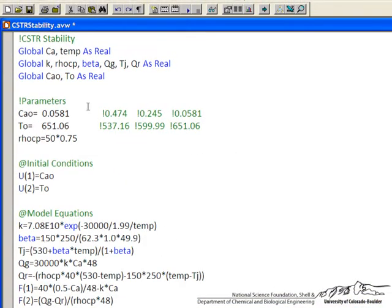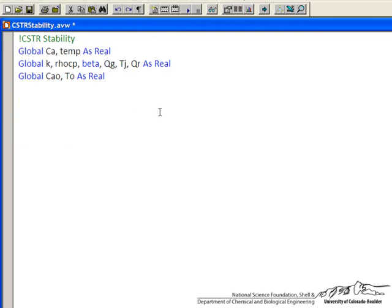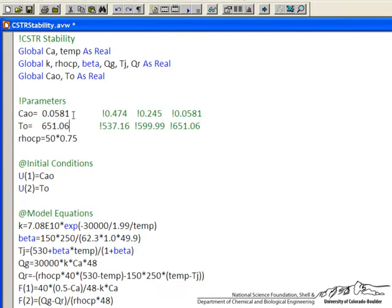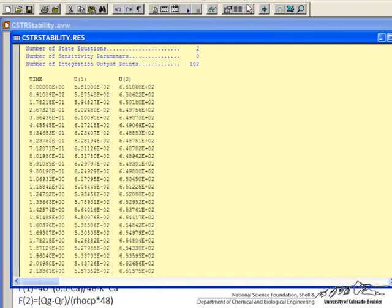Okay, so now I've changed our starting conditions. Instead of starting at the middle steady state, let's start at the high conversion, the upper steady state. So I put in the initial temperature as the steady state value in the initial concentration. I'll save it and tell it to run, and then look at the graph.